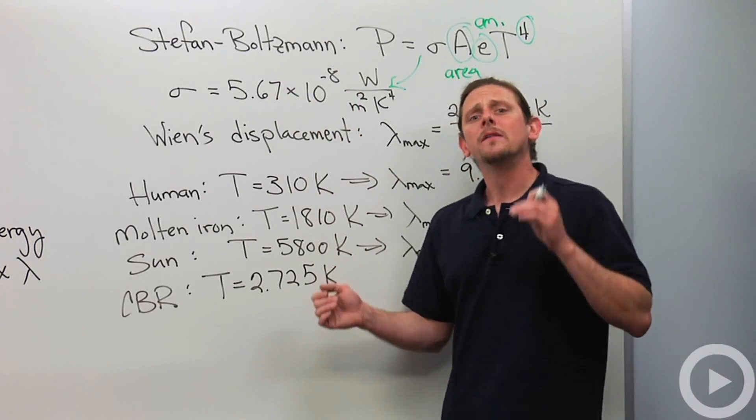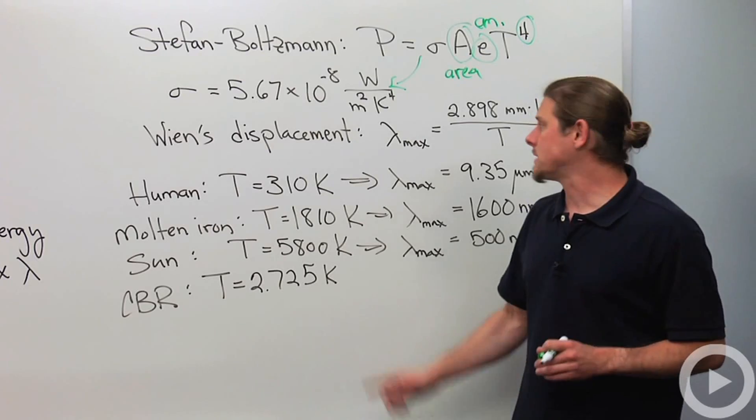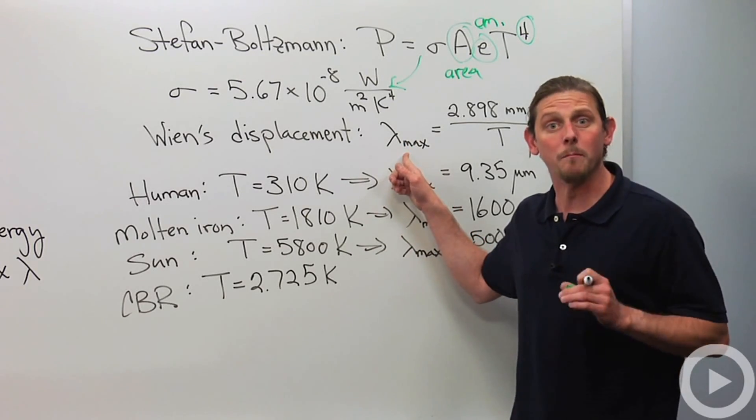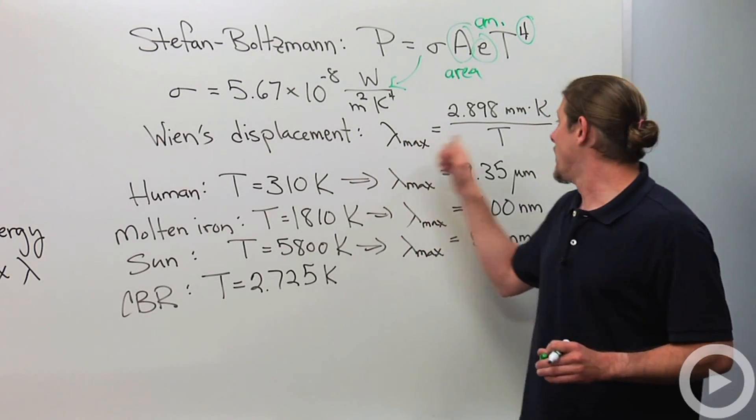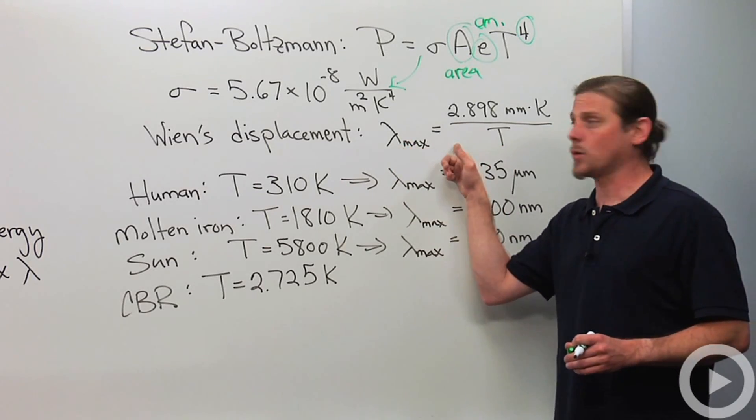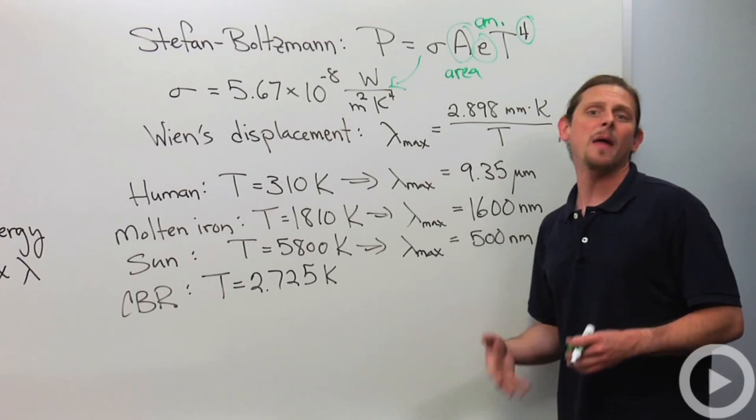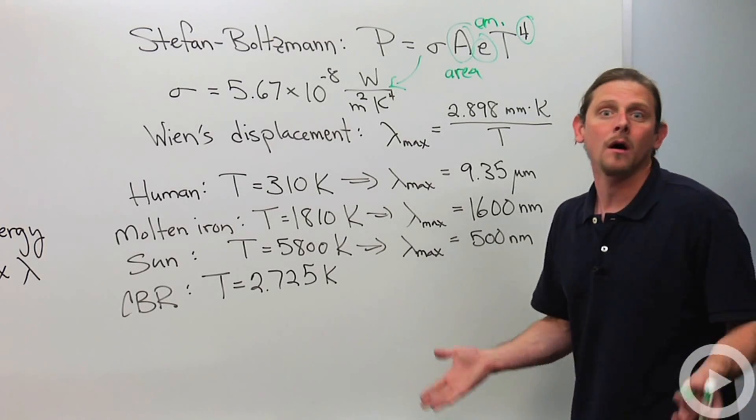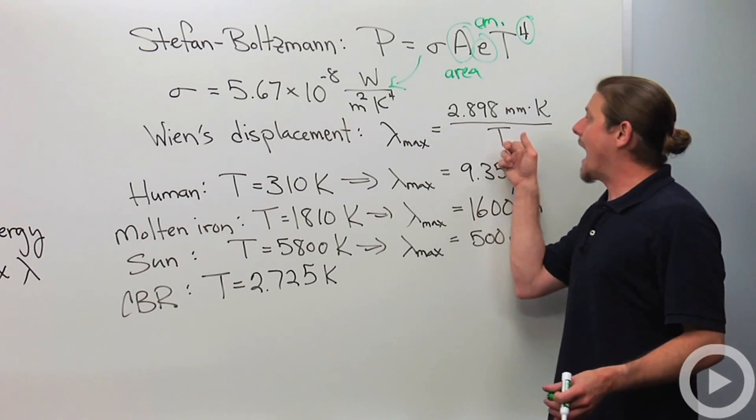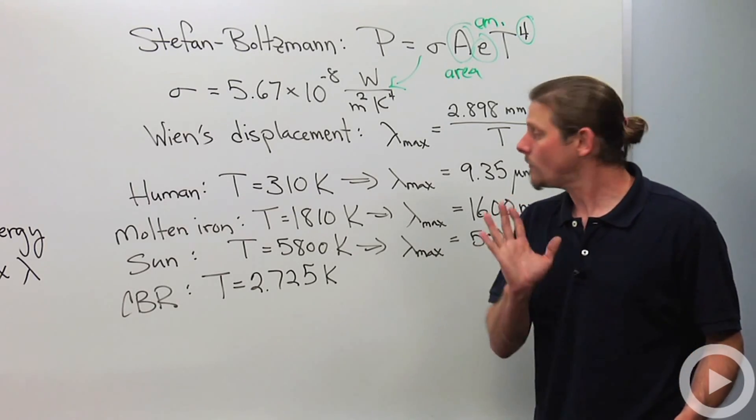Anyway, so that's the first equation. The second one is Wien's displacement law. Now, this tells us how we can calculate the wavelength associated with maximum intensity if we know the temperature. So, he tells us that lambda max is equal to 2.898 millimeter Kelvin, and that's just a constant. You could measure it in experiment, divided by the temperature. Again, that temperature has to be in Kelvin.